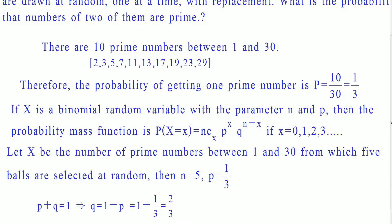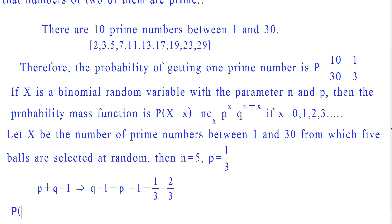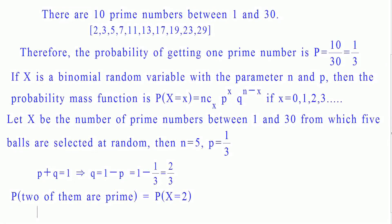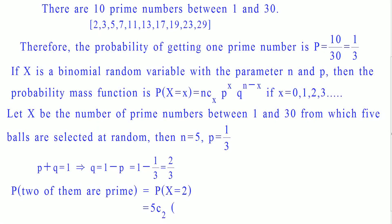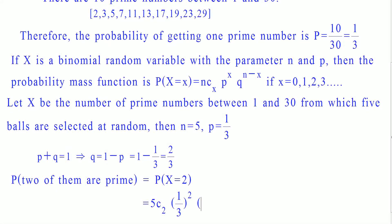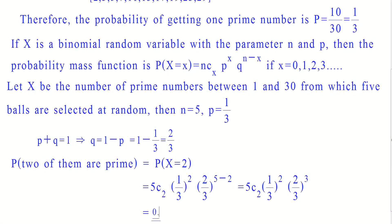To find the probability of getting 2 prime numbers out of 5 balls drawn, we need to find P(x = 2). Substituting n = 5, p = 1/3, and q = 2/3 in the binomial distribution formula, we get 5C2 · (1/3)^2 · (2/3)^3, which is equal to 0.33.